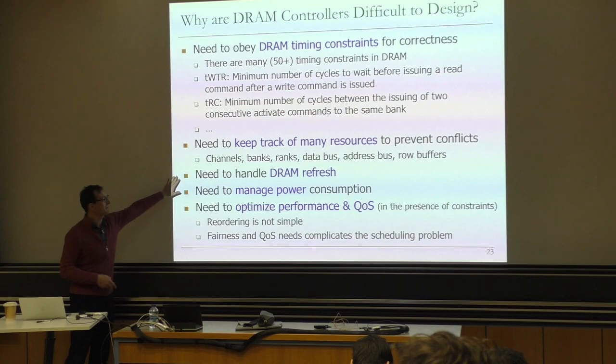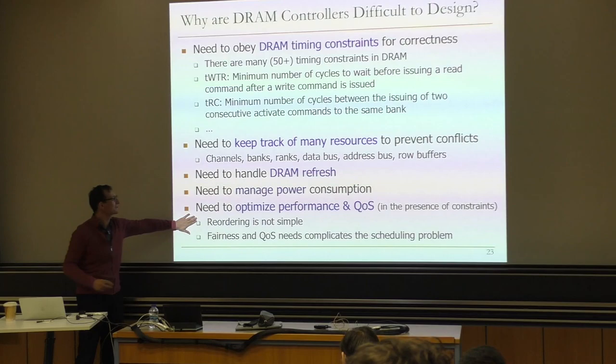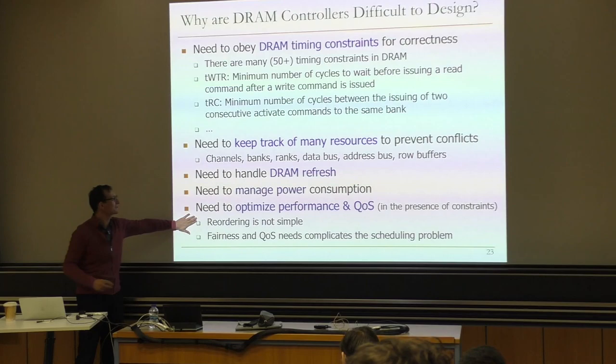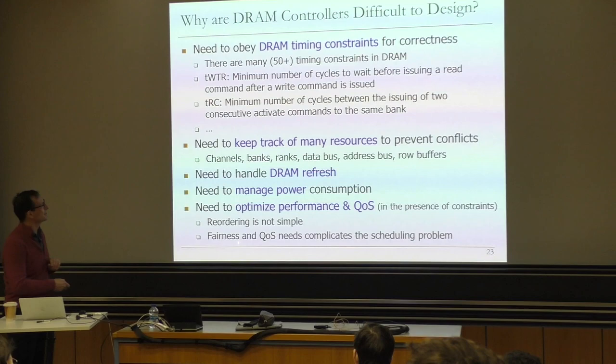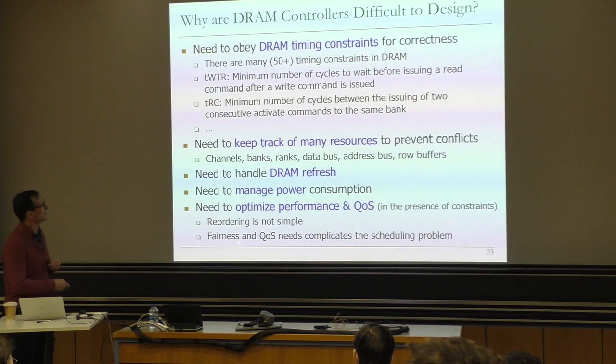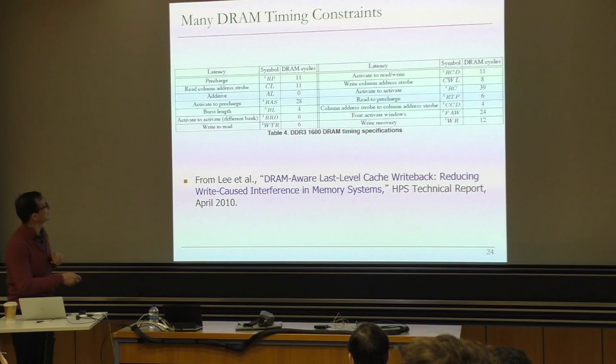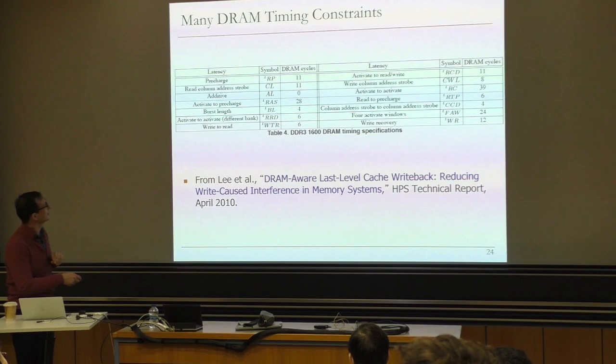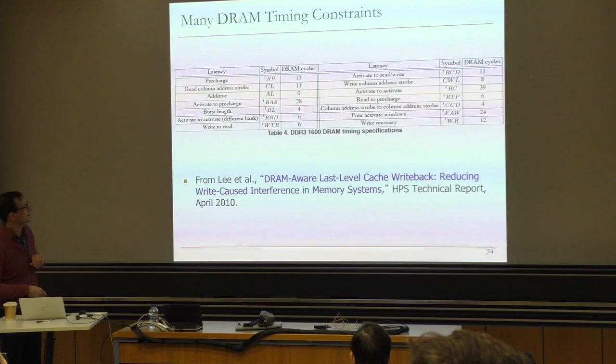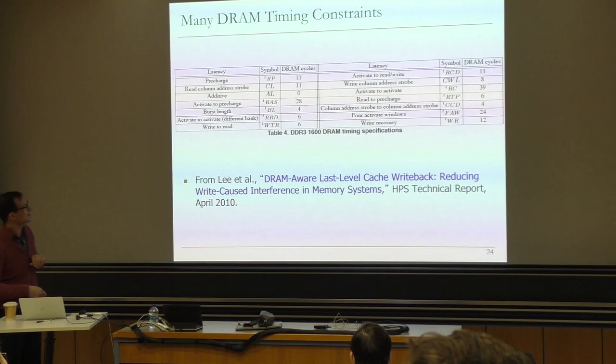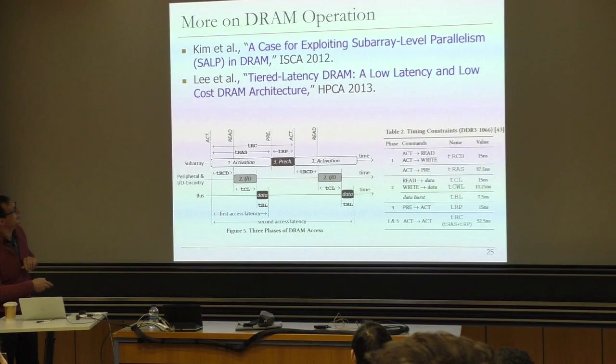On top of this, if you start thinking about fairness and quality of service to different cores and agents accessing memory, that complicates the scheduling problem. Looking at the timing constraints: this is the paper that talks about write-to-read scheduling — one of the first papers in this area. Write-to-read latency is six DRAM cycles — a lot of wasted cycles. TRCD, activate to read/write, is 13-15 nanoseconds in DDR3. Read-to-write is 11-15 nanoseconds, enforced at the rank level, because you need to turn around the bus.